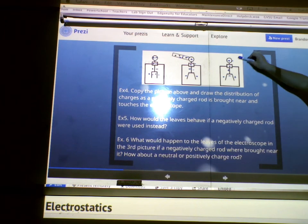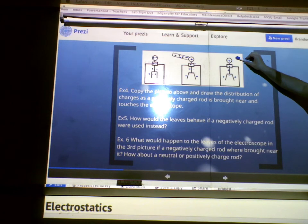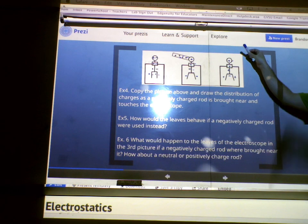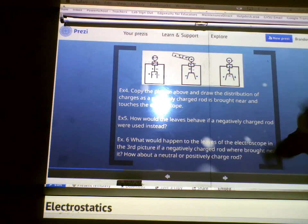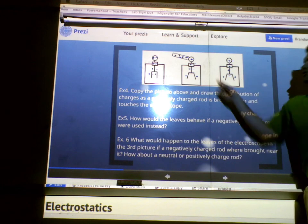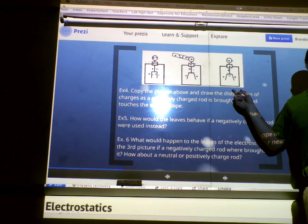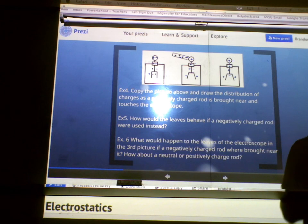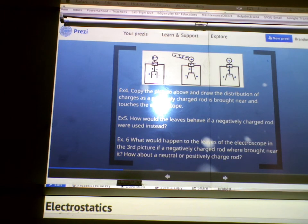What if I bring a positively charged rod near this one? What's going to happen to these electrons? They'll all move up, right? Right? They'll all move up, because this electron down here will be attracted to the positive rod. So, if the electron moves up, what happens to the overall charge down here? Does it get more positive or less positive? It gets more positive, right? So, what happens to the leaves? They move apart more, okay?